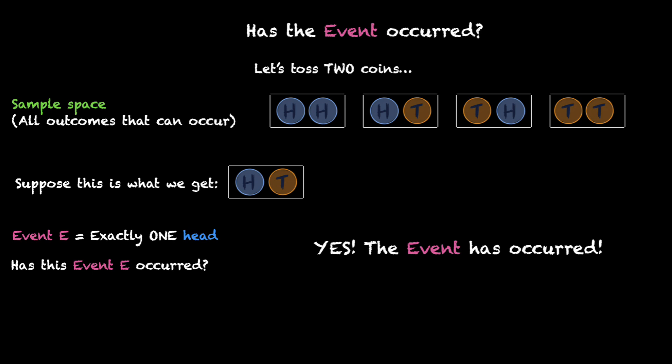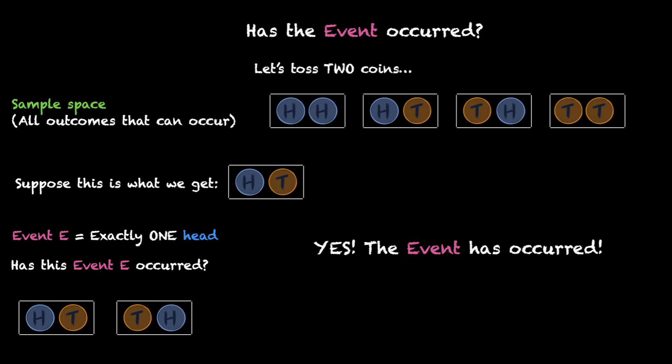In this case the first coin was heads, but we could have also got the second coin as heads. For that other outcome as well, we can say that the event has occurred. If we had gotten anything else, then we would have said that the event has not occurred.